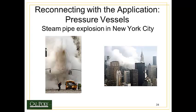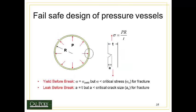Let's go back to our concept of the pressure vessel. Here's an example of a steam pipe explosion that happened after 9/11, which terrified the people of New York. For a cylindrical pressure vessel with radius R, internal pressure P, and wall thickness T containing a crack of size A, the hoop stress acting on the wall equals pressure times radius divided by T. We want to ensure the vessel can withstand pressure P without hitting the critical stress or critical crack size A_C.